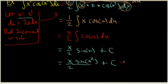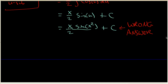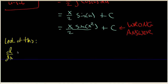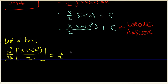Now the thing is, this is a wrong answer. And I want to make it clear why. We can figure out whether an answer is wrong by differentiating it. So we're going to take our answer and differentiate x times sine of x squared over 2. The easiest way is to pull the one half out and look at the derivative of x times sine of x squared. This is a product rule.